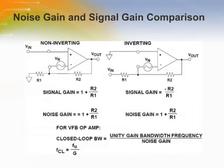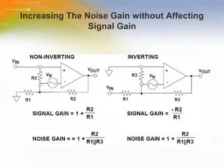Noise gain must be distinguished from signal gain. In the non-inverting mode, noise gain is equal to signal gain. However, in the inverting mode, the noise gain doesn't change, but the signal gain is now negative R2 over R1. The feedback elements may also be reactive networks. Noise gain can also be increased independent of signal gain by the addition of R3 across the input terminals of the op-amp. This technique can be used to stabilize decompensated op-amps which are unstable for low values of noise gain; however, the sensitivity to input noise and offset voltage is correspondingly increased.